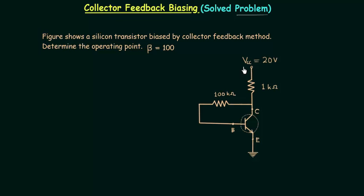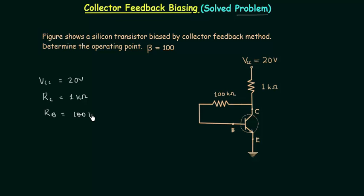In this problem, Vcc is equal to 20 volts. Resistance RC is equal to 1 kilo ohm. Resistance RB is equal to 100 kilo ohms. And we need to determine the coordinates of the operating point.